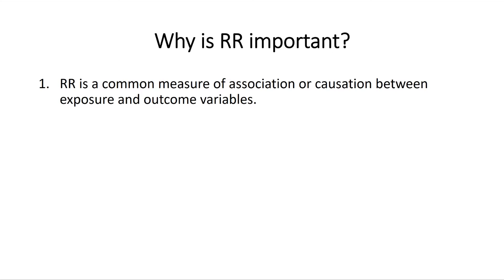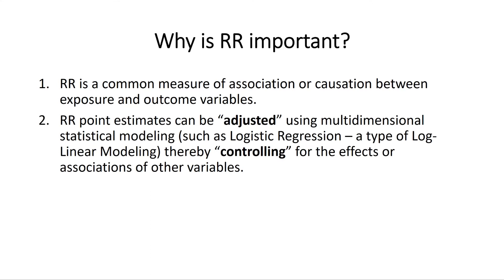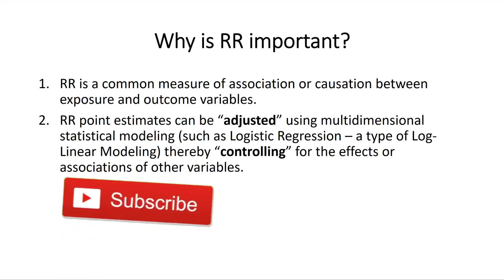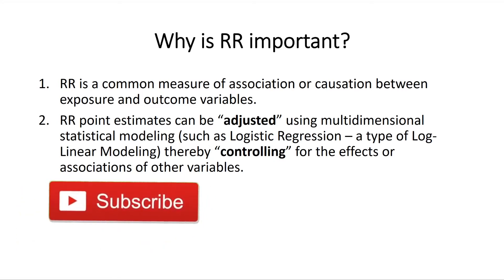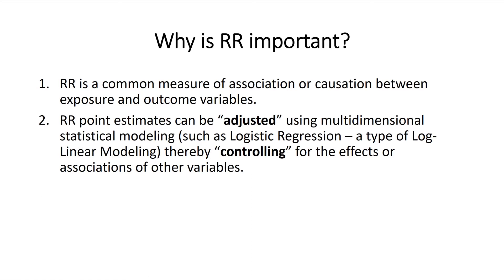One: Relative risk is a common measure of association or causation between exposure and outcome variables. Two: Relative risk point estimates can be adjusted using multidimensional statistical modeling, such as logistic regression, a type of log-linear modeling, thereby controlling for the effects or associations of other variables.